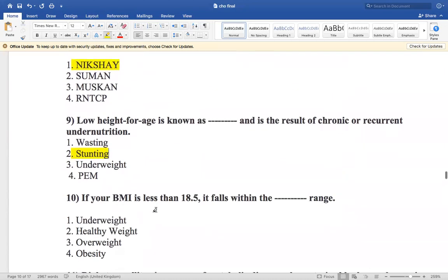So the next question is: if your body mass index is less than 18.5, it is the result of weight falls within the dash range. Underweight, healthy weight, overweight, or obesity. So it is underweight.